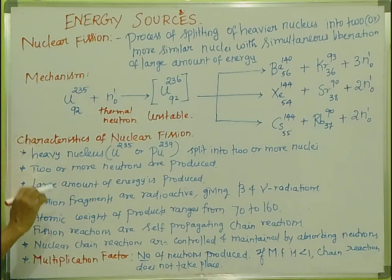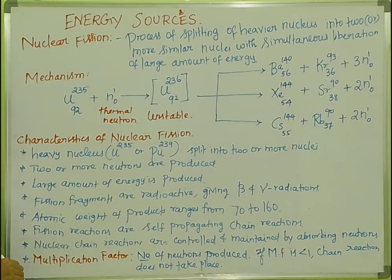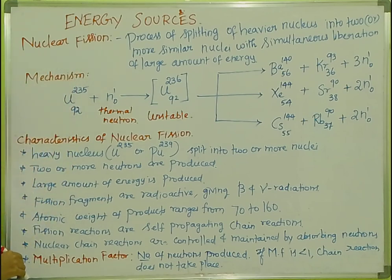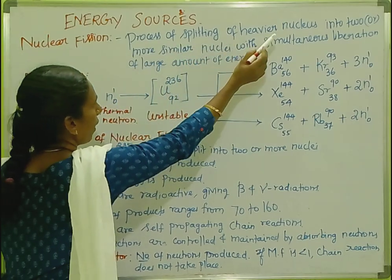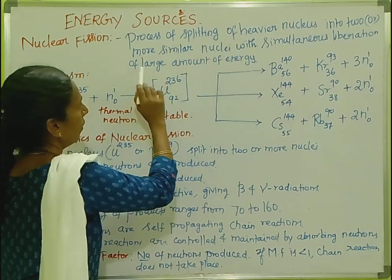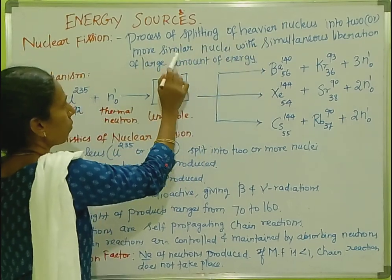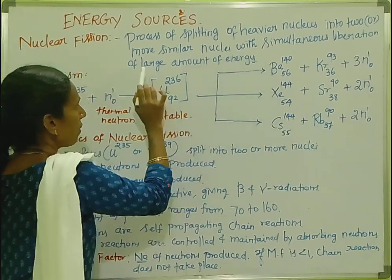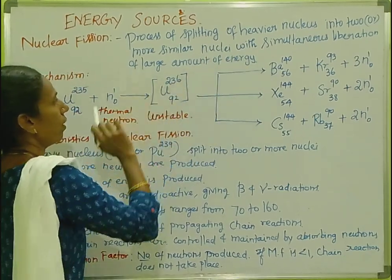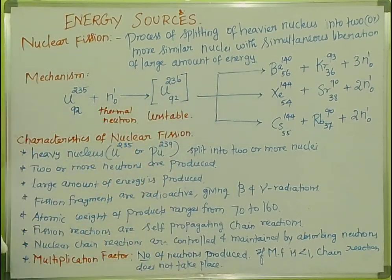Energy sources. We will talk about nuclear fission. Nuclear fission is a process of splitting of a heavier nucleus into two or more similar nuclei with simultaneous liberation of a large amount of energy.